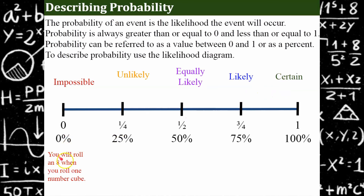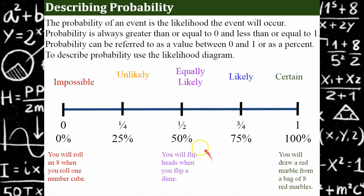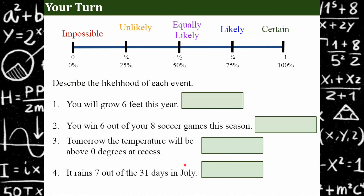Here are some more opportunities to think about probability descriptions. Rolling an eight on a number cube is impossible — the probability is zero. Drawing a red marble from a bag of all red marbles is certain — one hundred percent. Flipping a coin is equally likely. Now pause and use the likelihood diagram to describe four new events.